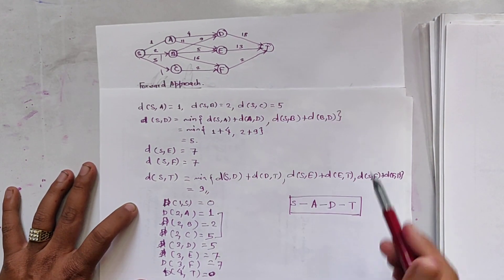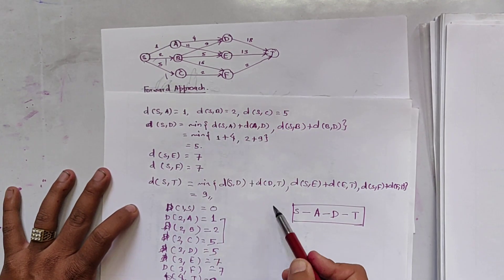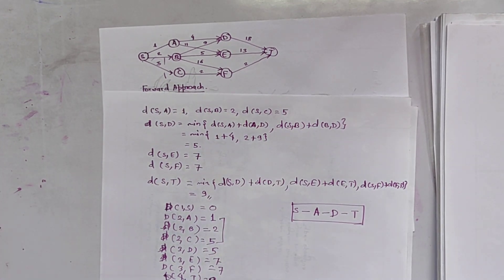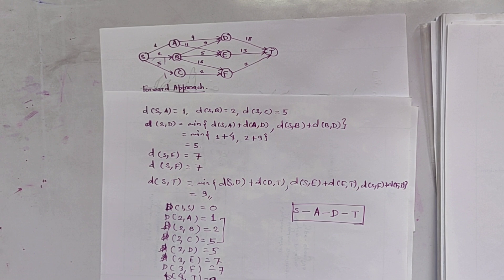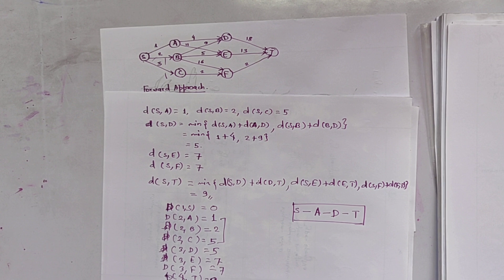So this is the stage-state path found using the backward approach of dynamic programming, going from s to t. In the next video I will be solving the zero-one knapsack problem using dynamic programming. Thank you and bye-bye.